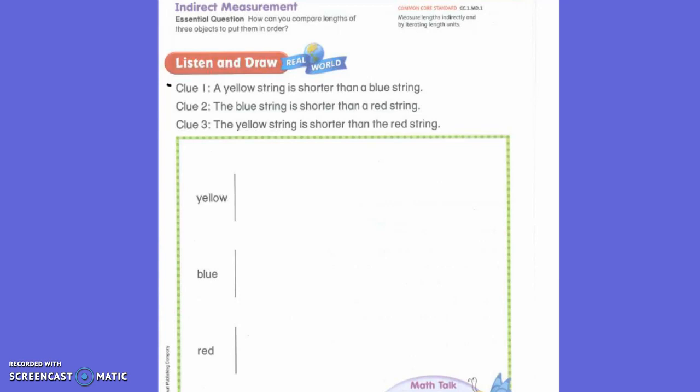A yellow string is shorter than a blue string. So how long should we draw our yellow string? Pretty short, shouldn't we? And where should I start my yellow string? On the line. Good.